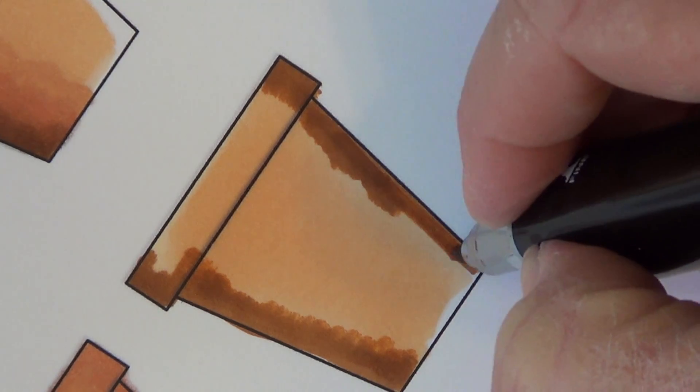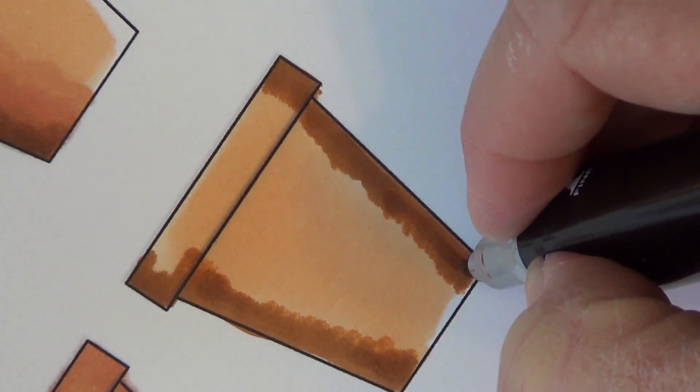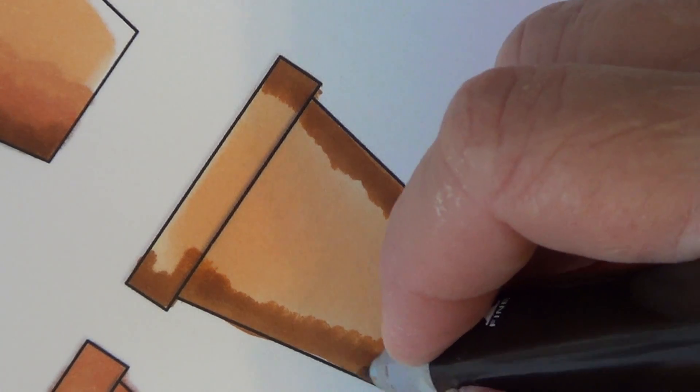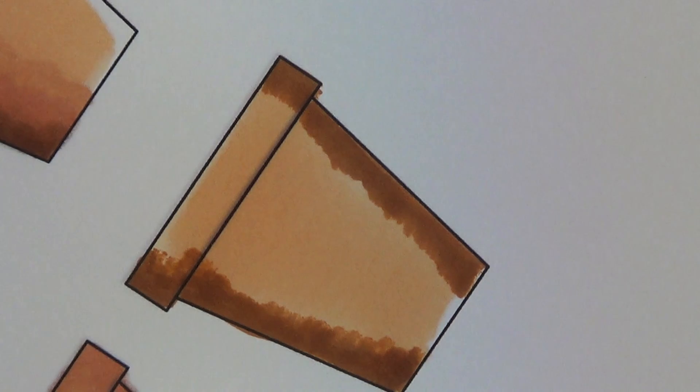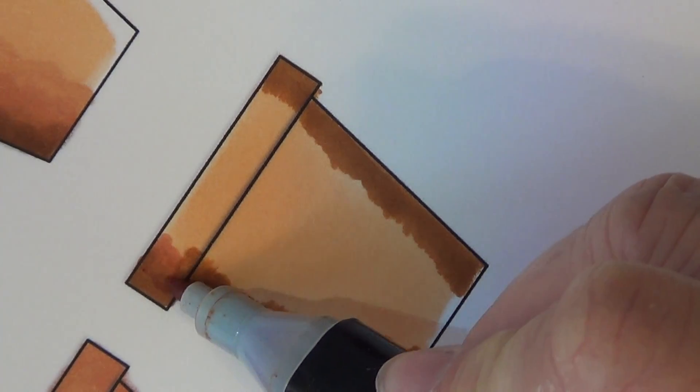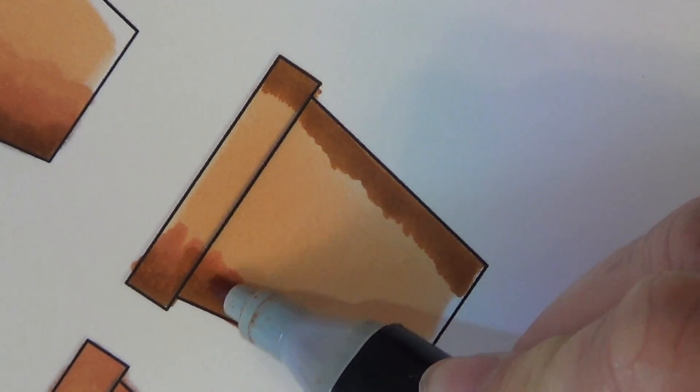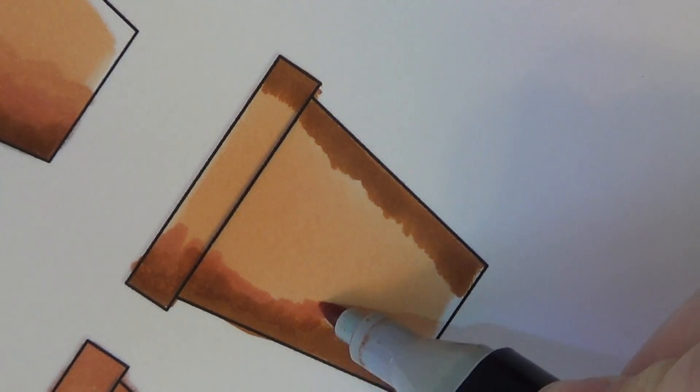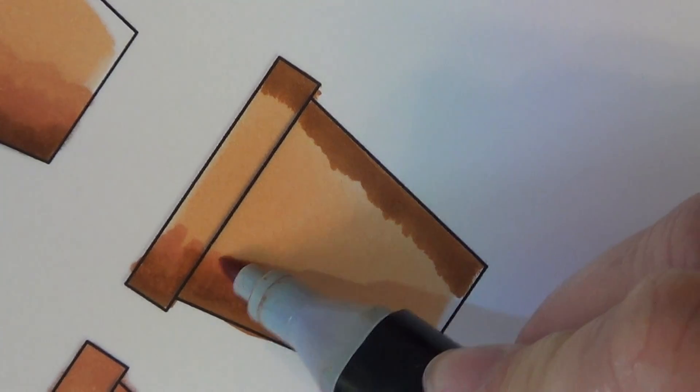If you're not a quick colorist, I recommend that you only do one side at a time and then go and do the other side. There's my TN6. Now I'm going to step down to my TN4 and I'm going to gently overlap these two colors, blending them together in the center of the two.